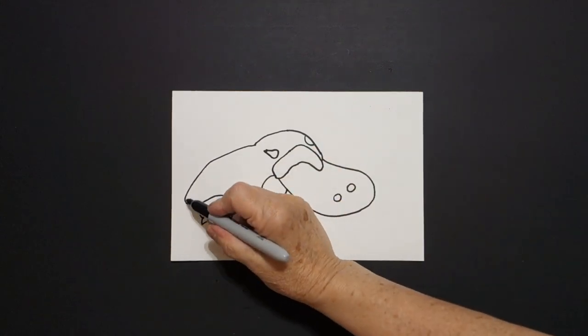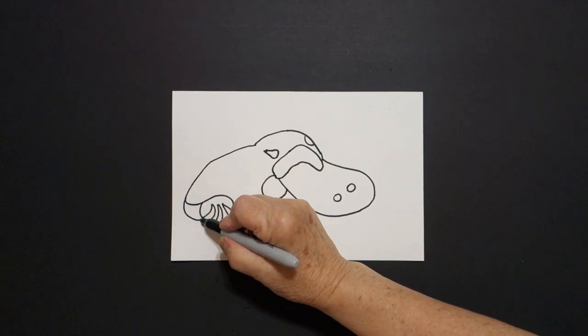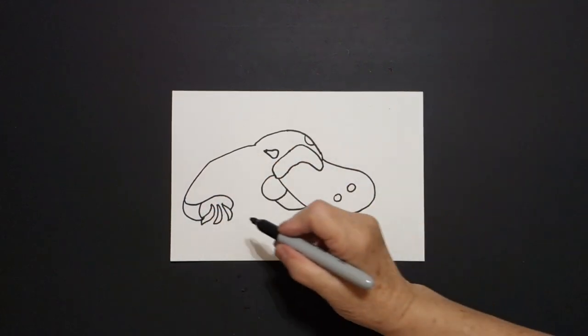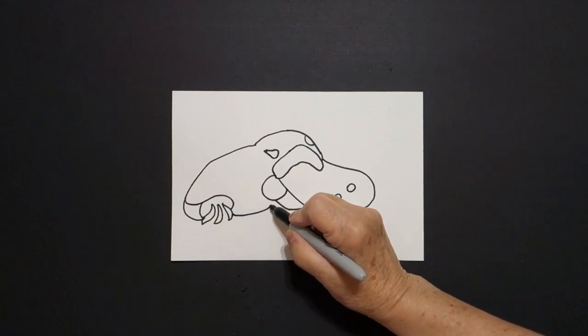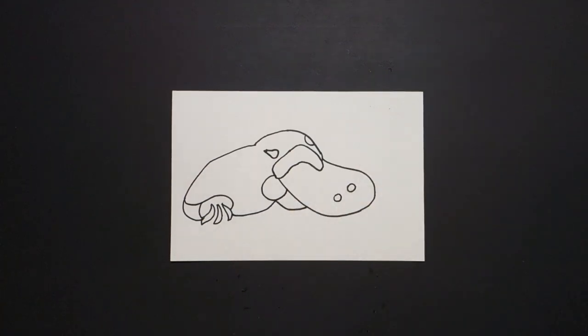Now, we can continue this curve line down, connect. Come over here on this side, curve line down, connect. On this side, we're just going to draw a curved line up, connect. All right.